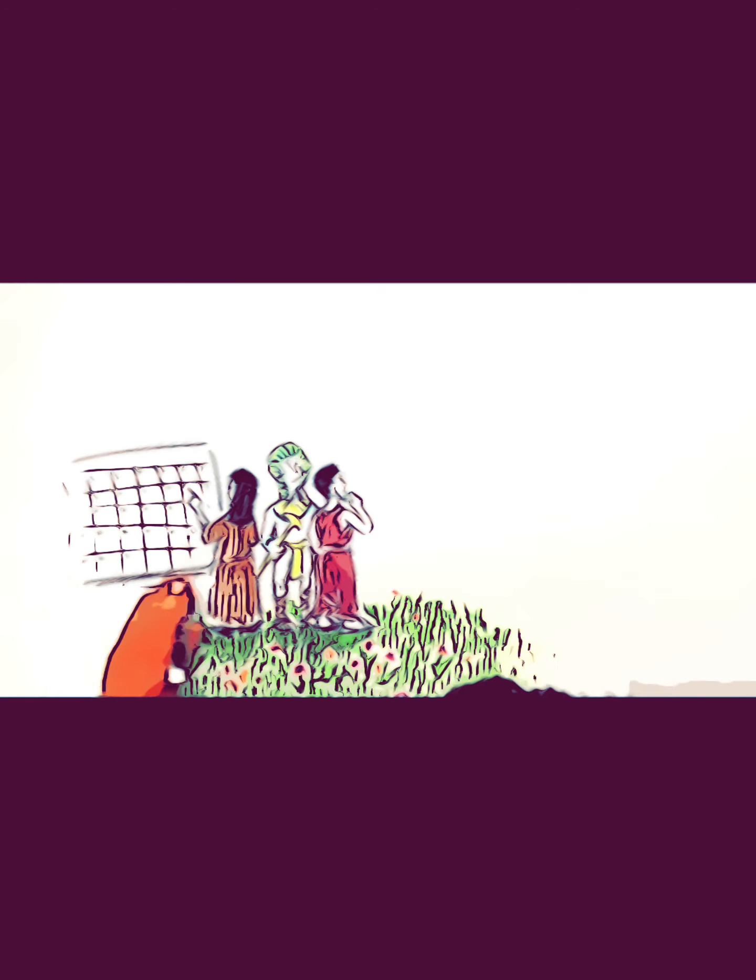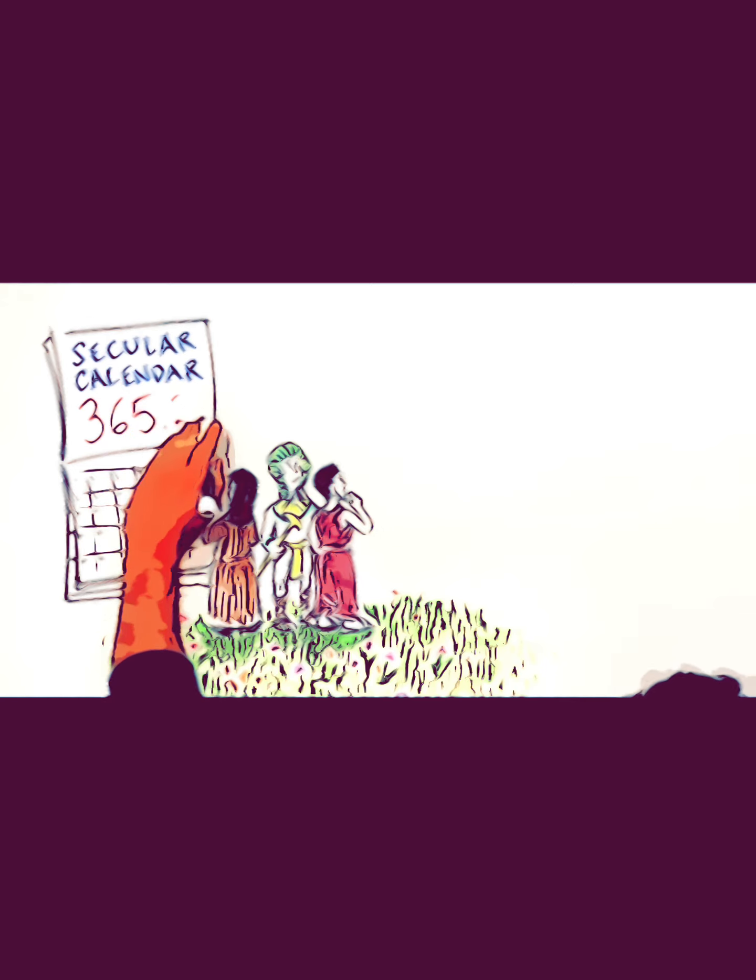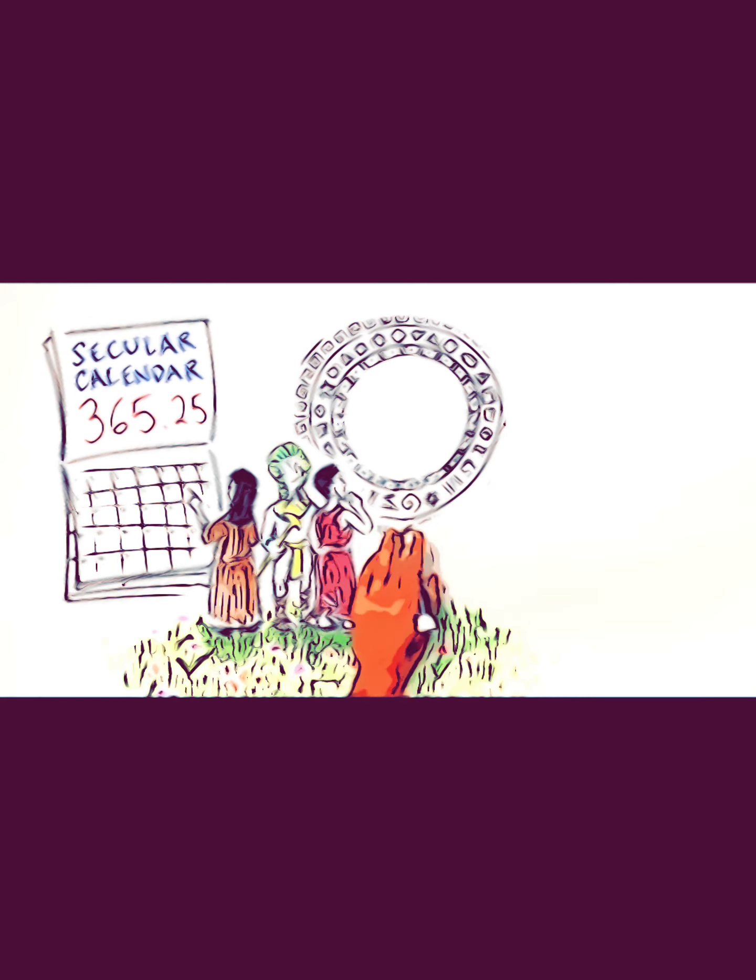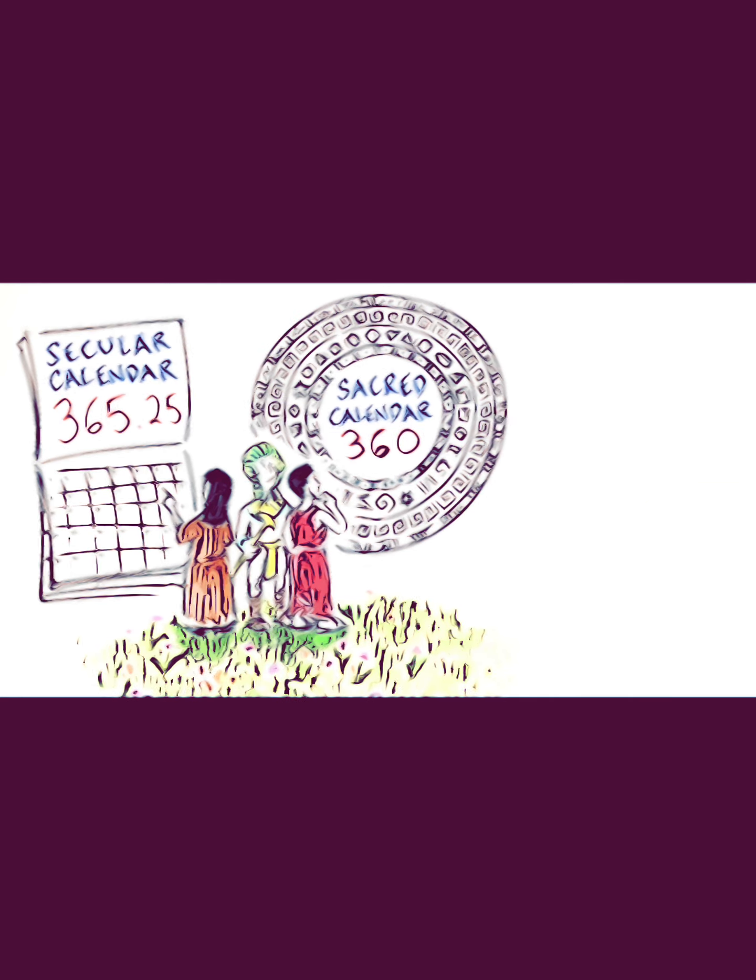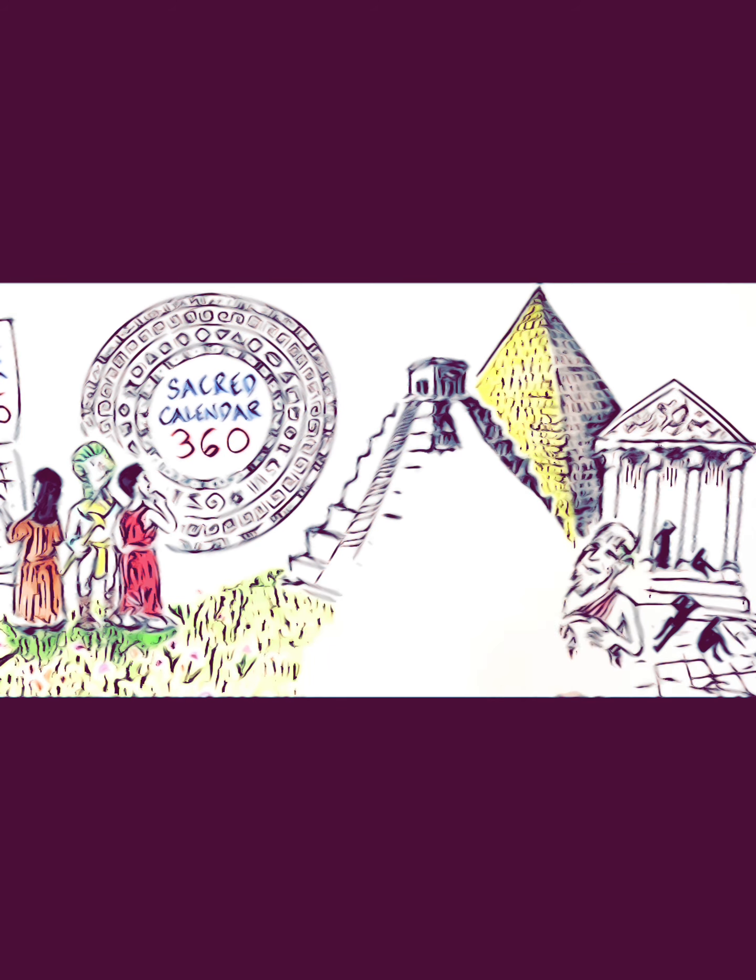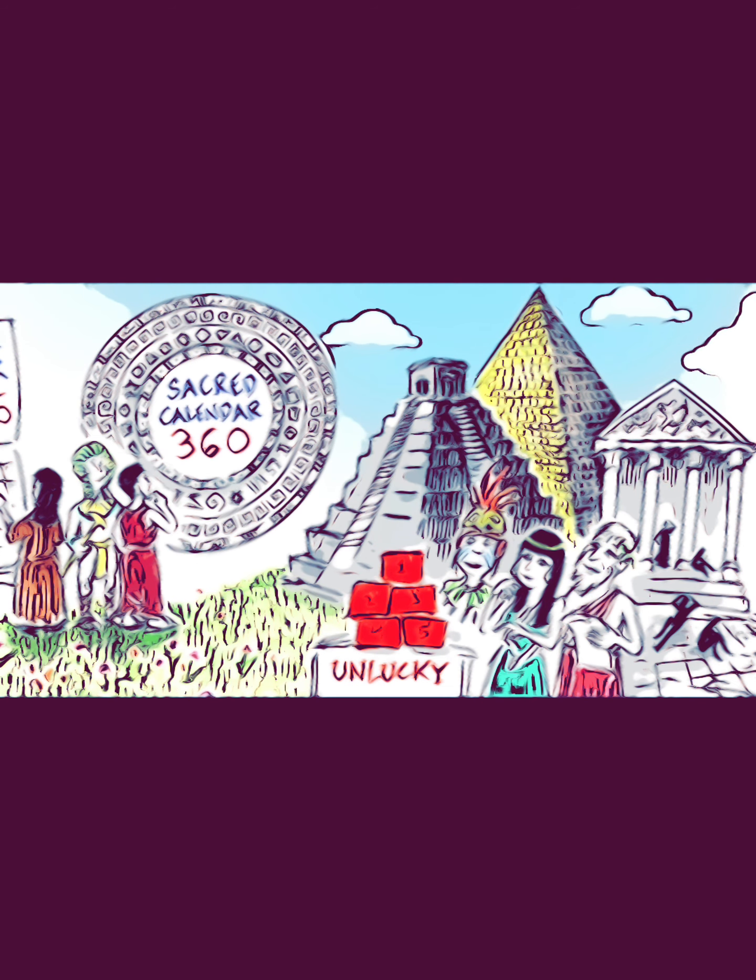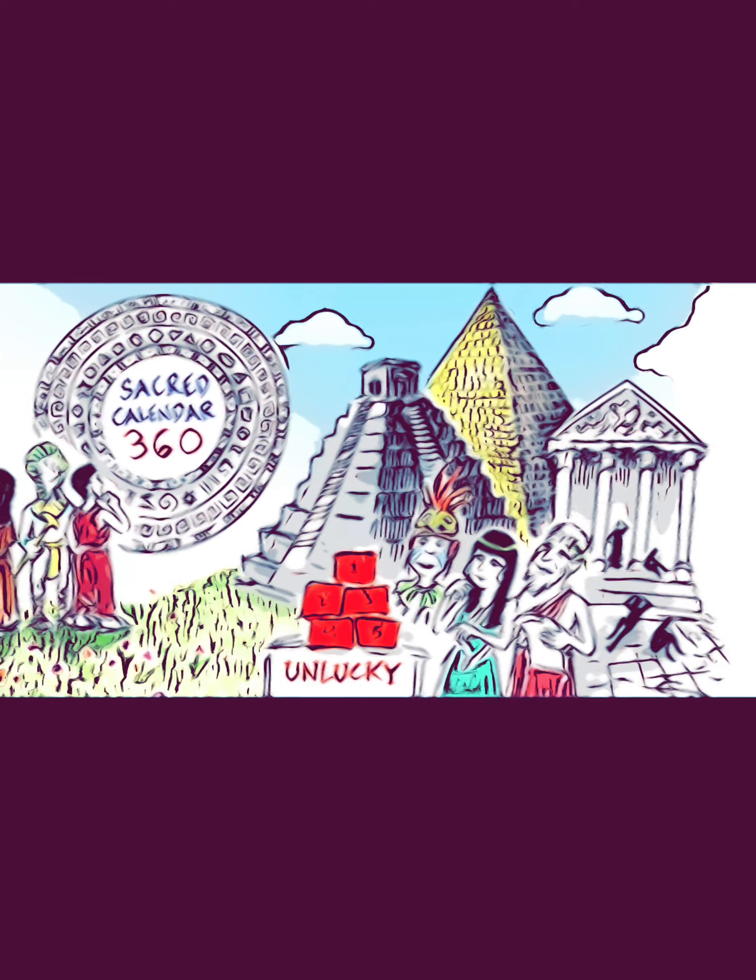Ancient cultures worldwide ran two calendars successively: a secular calendar of 365 and a quarter days, like our modern calendar, and a sacred calendar of 360 days with five intercalated days. The Greeks, Egyptians, and Mayans all set those five days aside as unlucky—no work or activity occurred. After five days off, they would resume their sacred year of 360 days.